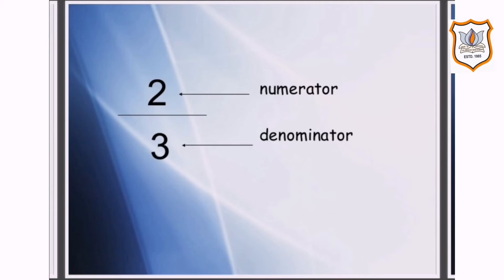The number below the line is called the denominator. It shows the total divisible number of equal parts the whole is divided into, or the total number of equal parts which are there in a collection. So here you can see, two is the numerator, which tells the number of equal parts taken, and three is the denominator, which tells the total number of equal parts in the whole or collection.